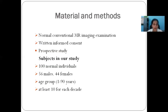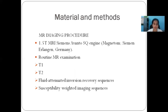We performed conventional MR imaging examinations with written informed consent. It was a prospective study comprising 100 normal individuals — 56 males and 44 females — belonging to the age group of 1 to 90 years, with at least 10 individuals from each decade. The study was performed on a 1.5 Tesla MRI Siemens Avanto SQ engine. Routine MR examination sequences including T1, T2, FLAIR, and SWI were taken.